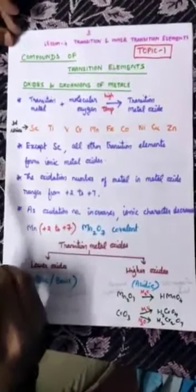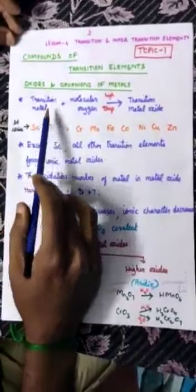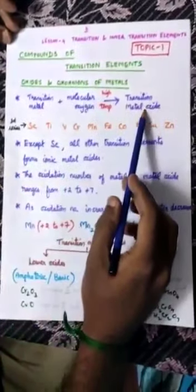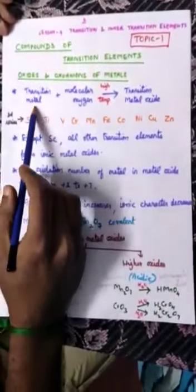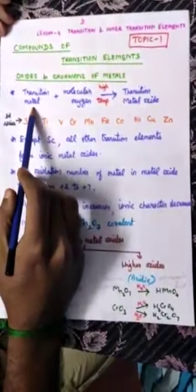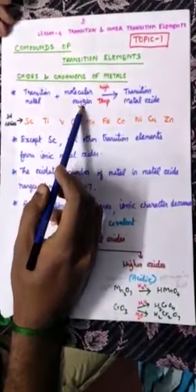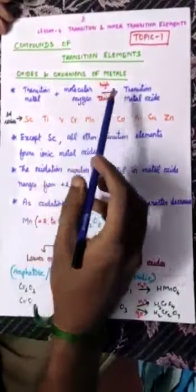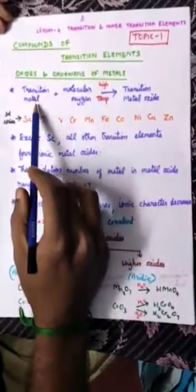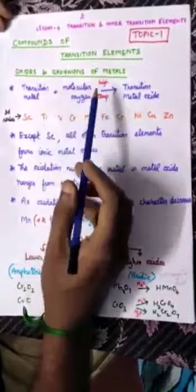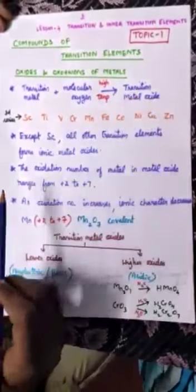We first want to know when does a transition metal form a transition metal oxide. Whatever transition metal we have, if it reacts with molecular oxygen at high temperature, that particular transition metal will get converted into a transition metal oxide.